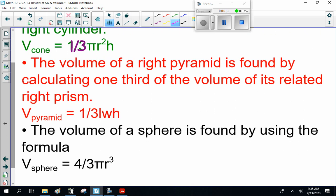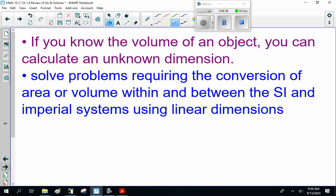So, the volume of a right pyramid is found by calculating one-third of the volume of its related right prism. So, the prism is length times width times height. The volume of a pyramid is one-third that. Now, the volume of a sphere is found by using the formula volume of a sphere is 4/3πr³. Now, I didn't do an example of everything here because you should remember this from grade 9. And, if I did an example of everything, I'd be here for an hour plus.